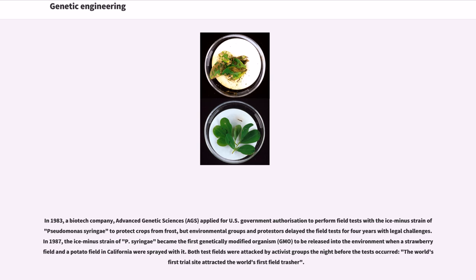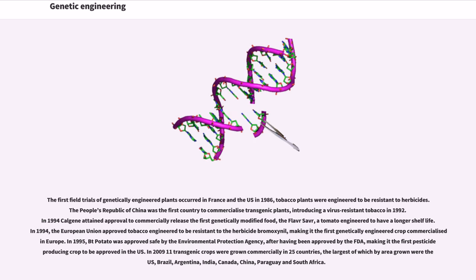The first field trials of genetically engineered plants occurred in France and the U.S. in 1986. Tobacco plants were engineered to be resistant to herbicides. The People's Republic of China was the first country to commercialize transgenic plants, introducing a virus-resistant tobacco in 1992. In 1994, Calgene attained approval to commercially release the first genetically modified food, the Flavor Saver, a tomato engineered to have a longer shelf life. In 1994, the European Union approved tobacco engineered to be resistant to the herbicide Bromoxynil, making it the first genetically engineered crop commercialized in Europe. In 1995, Bt potato was approved safe by the Environmental Protection Agency, after having been approved by the FDA, making it the first pesticide-producing crop to be approved in the U.S.